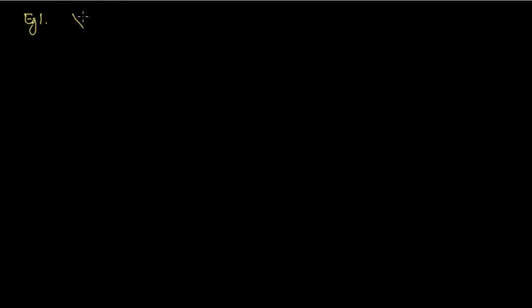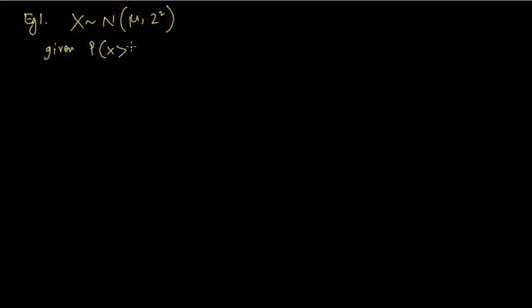Let me give you the Type 2 example. Example 1: a normal distribution is given where the mean is unknown and the variance is 2 squared, that means 4. Given: the probability of X greater than 4 equals 30%.